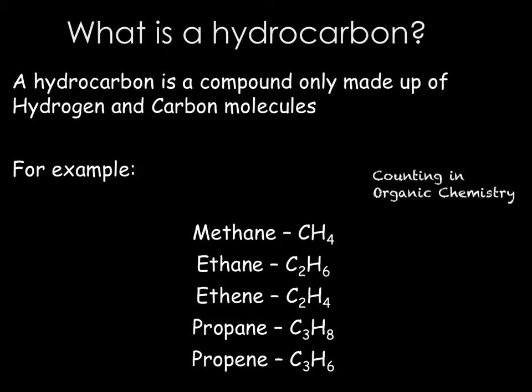Hydrocarbons fall under the larger bracket of organic chemistry, and it is very important that you are able to count in organic chemistry. You need to be able to count to four. One is meth — this relates to the number of carbons in the chain. Two carbons in the chain gives us eth. Three carbons gives us prop. And finally, four gives us but.